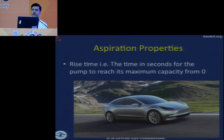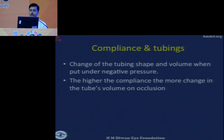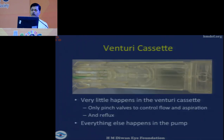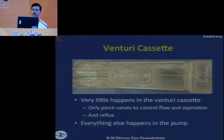In a peristaltic system, vacuum starts building up only when occlusion occurs. But in a venturi system, as soon as you enter foot position 2, your vacuum is full on. The tubings determine much of what happens in aspiration. The cassettes used in Infinity and Centurion are peristaltic-based, whereas in the venturi cassette, very little happens inside the cassette — everything happens in the pump. Inside the cassette there is only pinching of occlusion and pinching of flow.